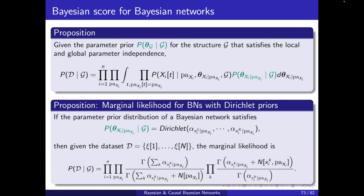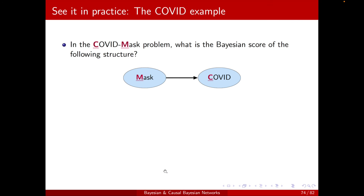If we have a Dirichlet prior for theta of xi conditioned on parents of xi, the marginal likelihood for the Bayesian network simplifies. It becomes a product over variables, over parent configurations, and over values of xi, of gamma(alpha_k + count) divided by gamma(alpha_k), with a normalization term summing over all values.